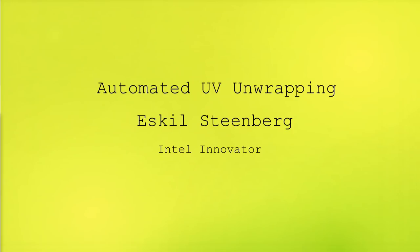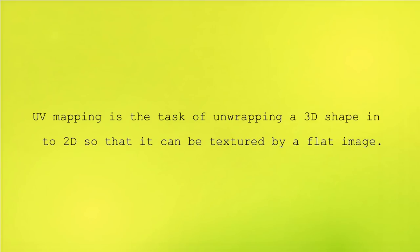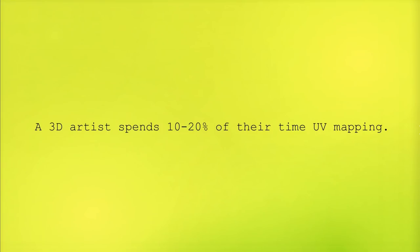I'm going to talk about my work creating automated UV unwrapping. This is a project I've been working on for quite some time and it's now finally coming to fruition. UV mapping is the task of taking a 3D model and unwrapping it into a flat surface so that you can put a texture on it — it tells the model what part of the 2D texture corresponds to which part of the 3D model. A normal 3D artist spends maybe 10 to 20 percent of their time doing UV mapping, which is a significant part of the workload, for instance on a game.